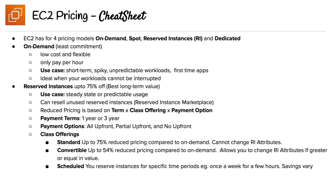We're on to the EC2 pricing cheat sheet, and this one is a two pager. EC2 has four pricing models: on-demand, spot, reserved instances (also known as RI), and dedicated. Looking first at on-demand, it requires the least commitment from you. It is low cost and flexible — you only pay per hour. The use cases are for short-term, spiky, unpredictable workloads or first-time applications. It's ideal when you want workloads that cannot be interrupted, whereas with spot, interruption is possible.